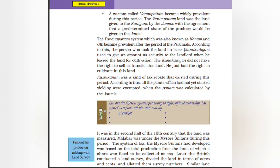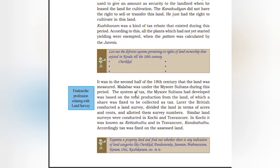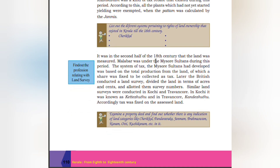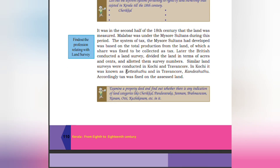Kurikanam was a kind of tax rebate that existed during this period; all plots which had not yet started yielding were exempted when the rent was calculated by the Jenmies. It was in the second half of the 18th century that land was measured. Malabar was under the Mysore sultans during this period. The tax system developed by the Mysore sultans was based on total production from the land, of which a share was fixed to be collected as tax. Later, the British conducted a land survey, divided the land in terms of acres and cents, and assigned survey numbers. Similar land surveys were conducted in Kochi and Travancore.